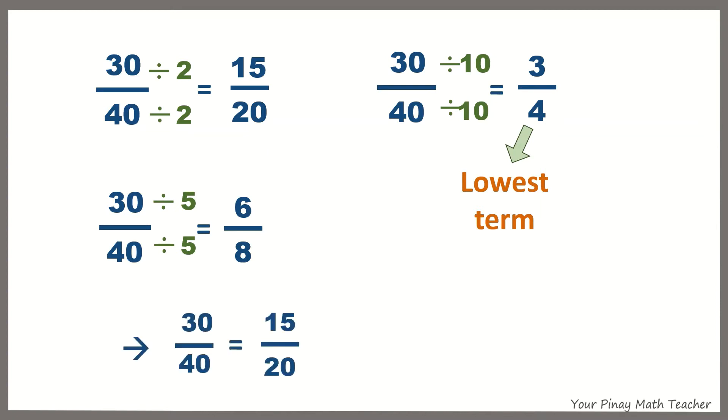So, 30 over 40 is equivalent to 15 over 20, 6 eighths, and 3 fourths.